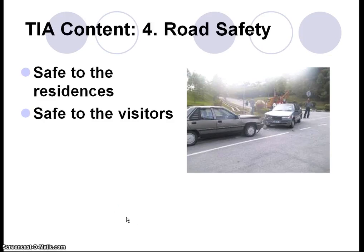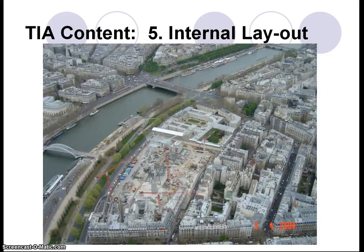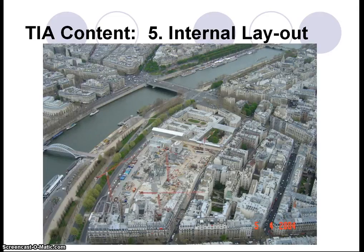We also have to look into road safety — safe for residents and safe for visitors — so we conduct a road safety audit on the road system. If the development is large, we must also look into the internal layout to ensure congestion does not occur on the internal road system. If the egress and ingress are not well designed, users will have difficulty entering and exiting, which may create serious congestion inside the development.